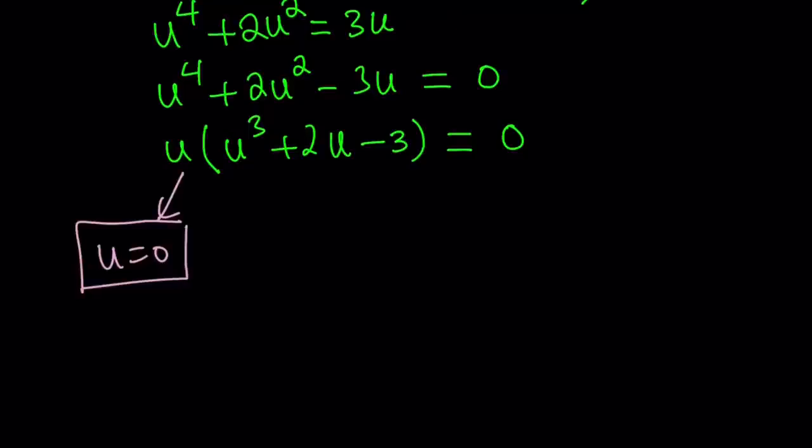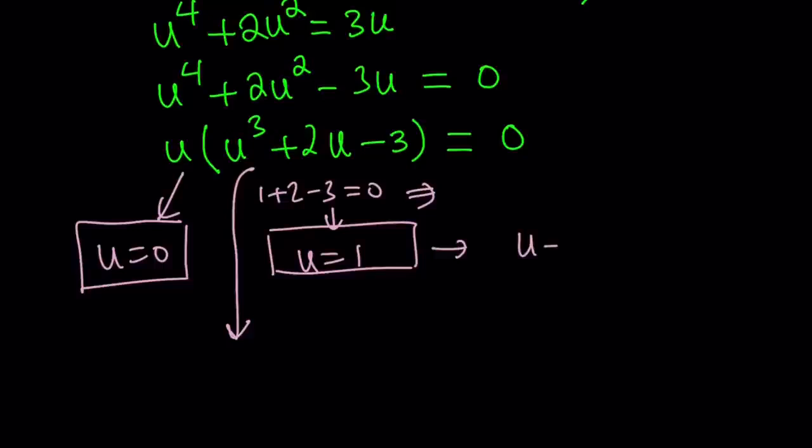And then the second equation, the cubic, has a special property. Remember we talked about this many times before. The first thing you check in a polynomial is the sum of the coefficients. If you add these up, 1 plus 2 minus 3 is equal to 0. That just means that u equals 1 is a solution. So u equals 1 is a valid solution. It's also nice because it allows us to reduce the degree by using long division or factoring. So I'm going to write this cubic as, since u equals 1 is a solution, that implies by factor theorem, u minus 1 is a factor.